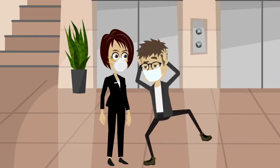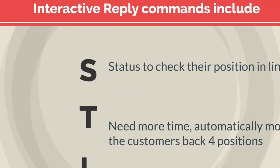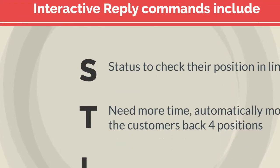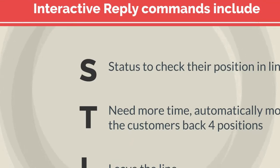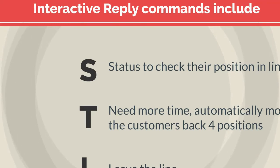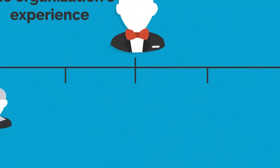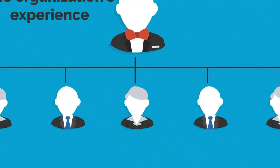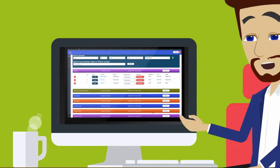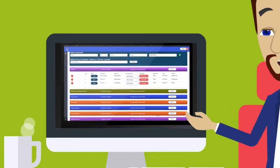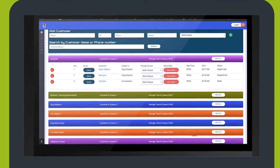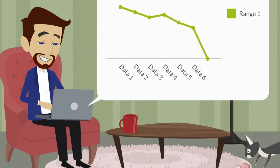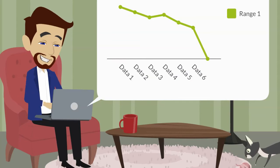Automate the Wait's customer-centered software includes optional interactive commands that empower customers while they wait, lowering their level of anxiety. Interactive reply commands include 'S' for status to check their position in line, and 'T' for needing more time, automatically moving the customer back four positions. The organization's queue manager can optimize throughput while controlling the flow of customers, lowering the risk of systematic spread of COVID-19.